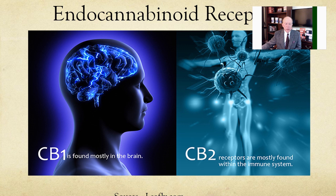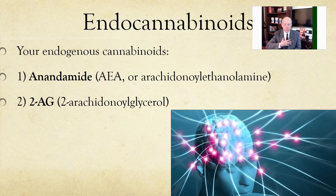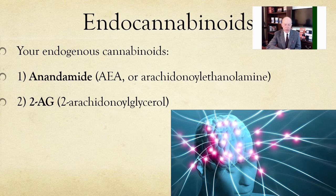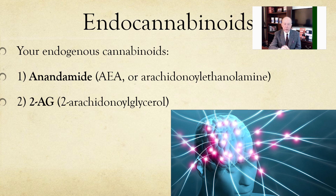The cannabinoid receptors CB1 relate to our neurotransmitters in the brain; CB2 relate to the immune system. The molecule our body produces from arachidonic acid is anandamide. Anandamide is the endocannabinoid that binds to the endocannabinoid receptors in our brain cells and all the cells in our body. There are also other receptors that interact — serotonin receptors, among others — and there are enzymes in our bodies that break down anandamide. The term anandamide comes from ananda, a Sanskrit term that means bliss or hope.